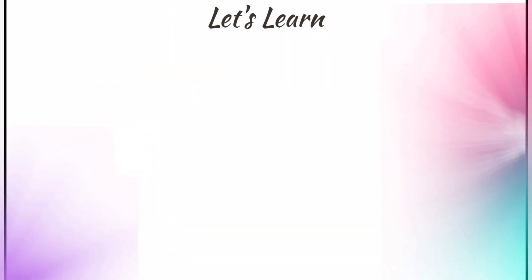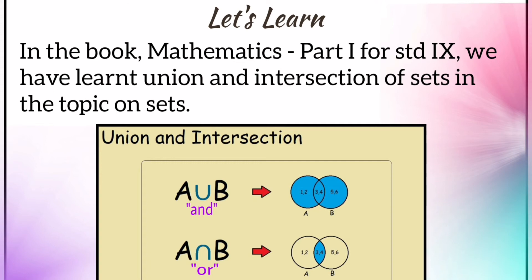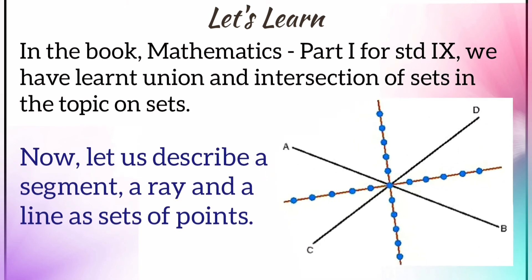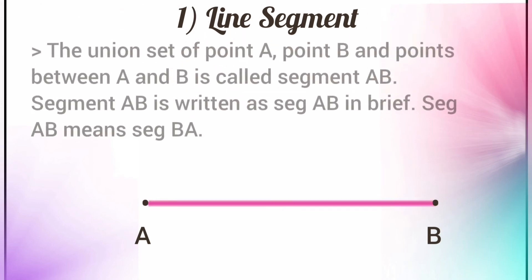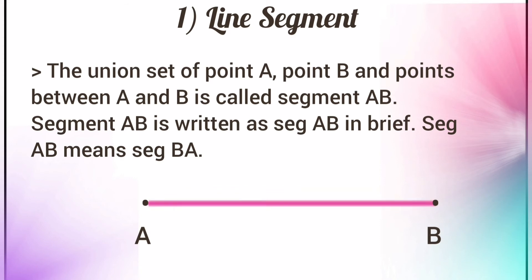Let's learn more about points and groups of points. As we have seen in the previous lesson about union and intersection of sets, we are going to use the same here as we learn about sets of points — that is segment, ray, and line. The first one is line segment. You can see the diagram: the union of the set of point A, point B, and the points between A and B is called segment AB.